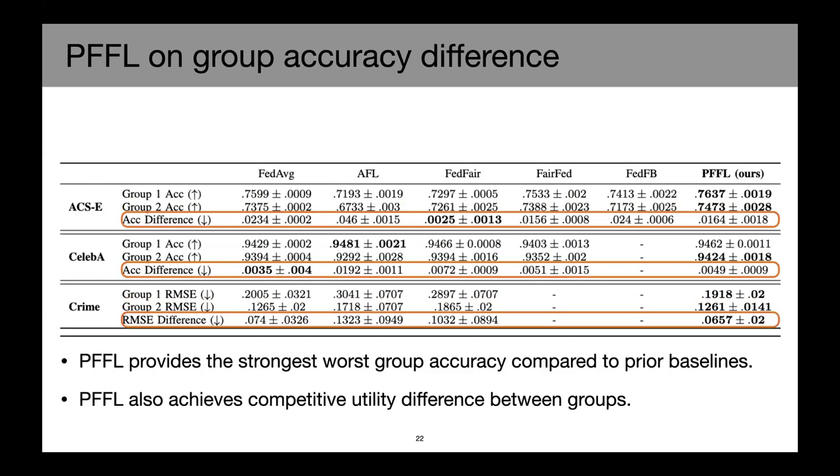Although some of the methods, such as FedFair and FairFed are able to achieve very small accuracy difference between the two groups, for example, the FedFair in the ACS employment case, you can see the group one and group two accuracy is drastically lower than even the Fed averaging baseline and much lower than our PFFL method as well. So that kind of suggests that those methods trying to enforce equal prediction quality can have compromised utility performance. And in fact, if you look at the accuracy difference of PFFL, it also achieves competitive accuracy difference between groups compared to these other methods.